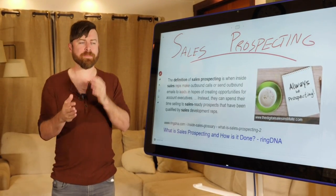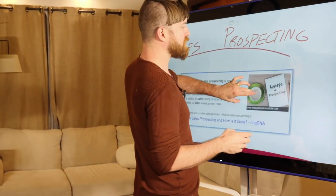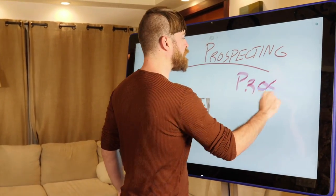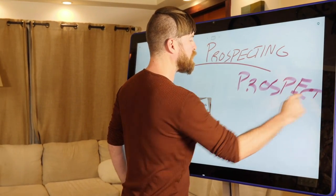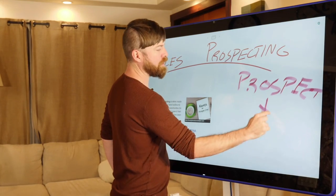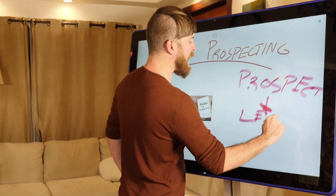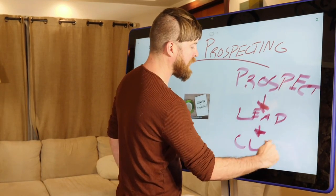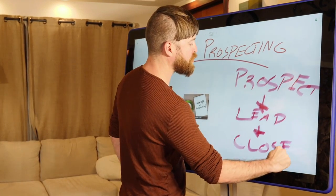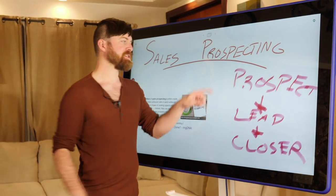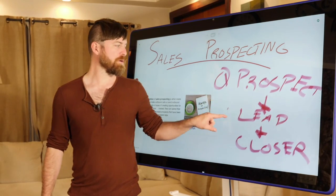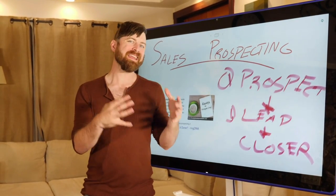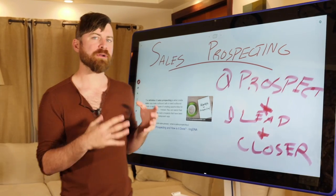Prospecting is the first step. Generally, the way things go is: you prospect for a lead, you find somebody who's interested — which is called a lead — and then that lead is pitched or sent to a closer to close a deal. So we have the 3 stages of sales, and everything starts with finding people that are interested.